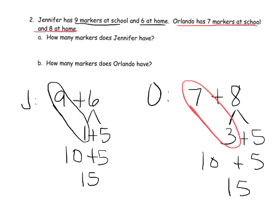And oh, so Jennifer has 15 markers. And Orlando also has 15 markers. So they're tied, aren't they? And that is how we use making 10 to add within 20.